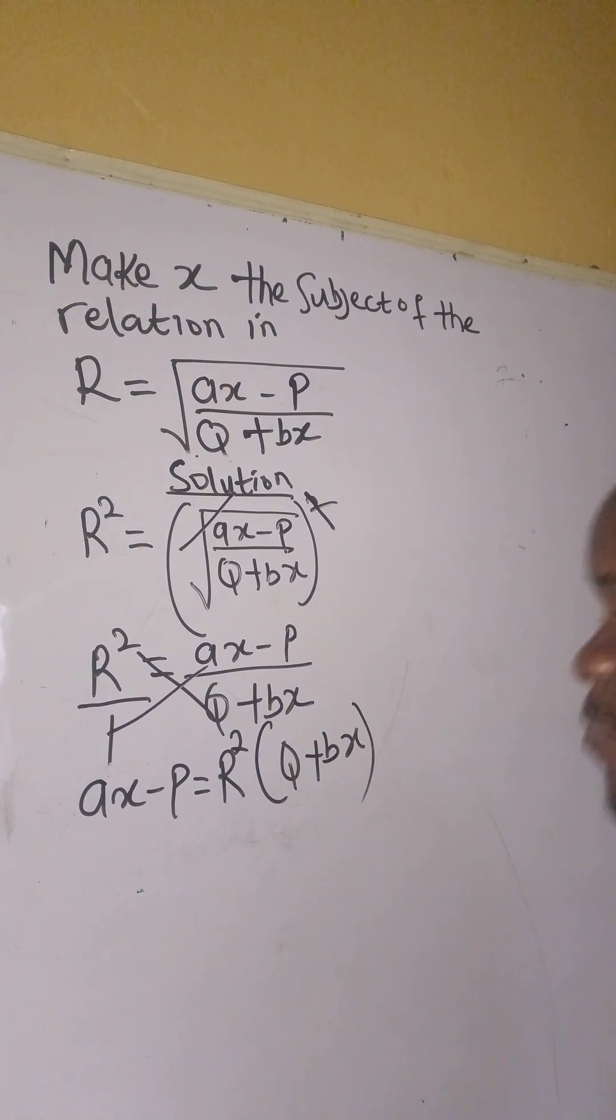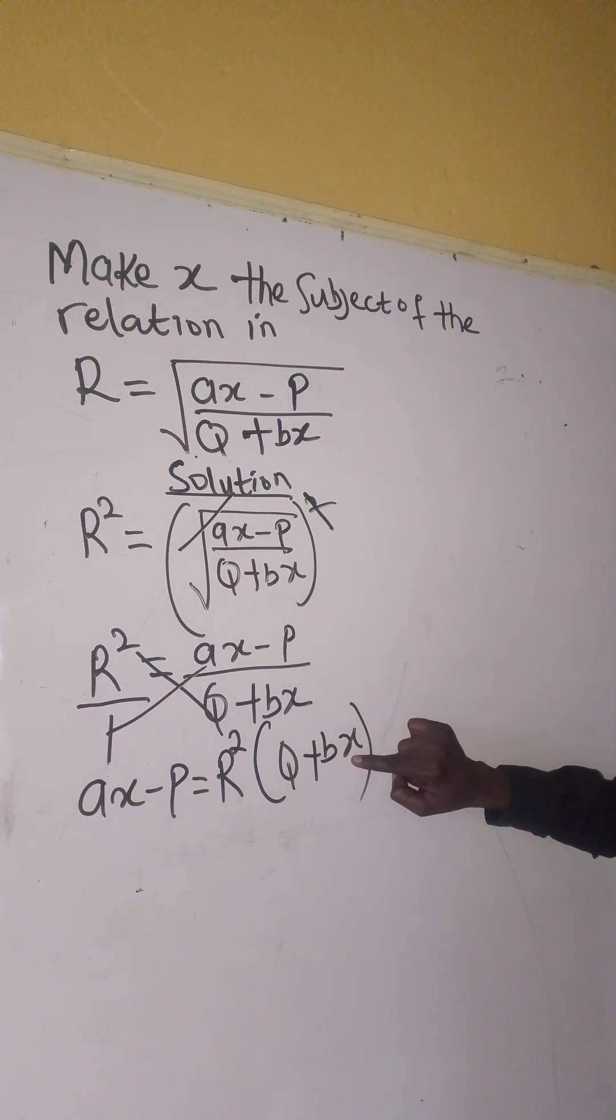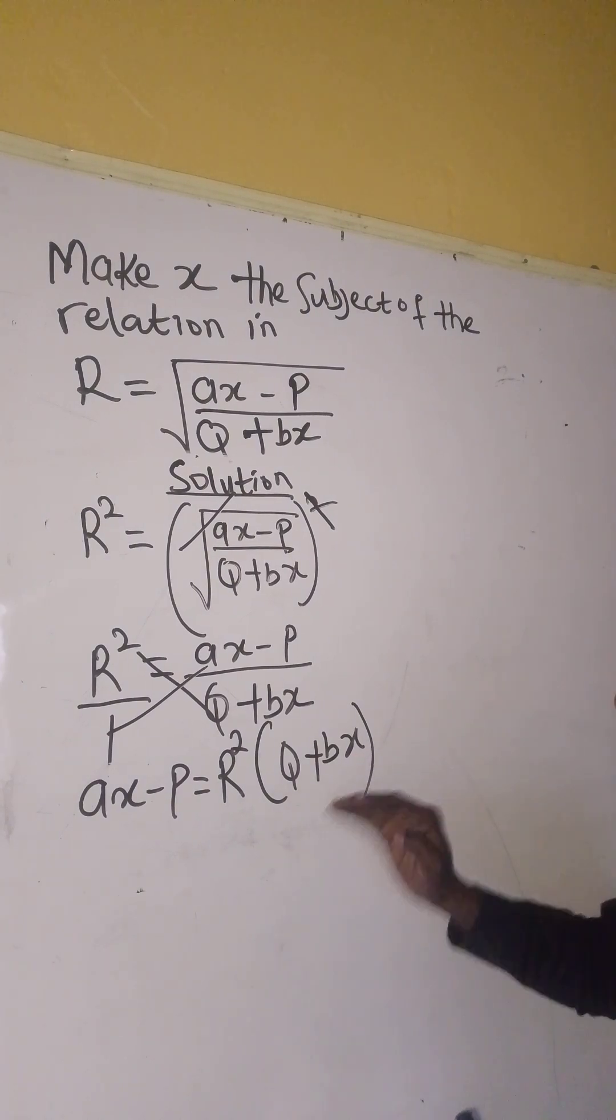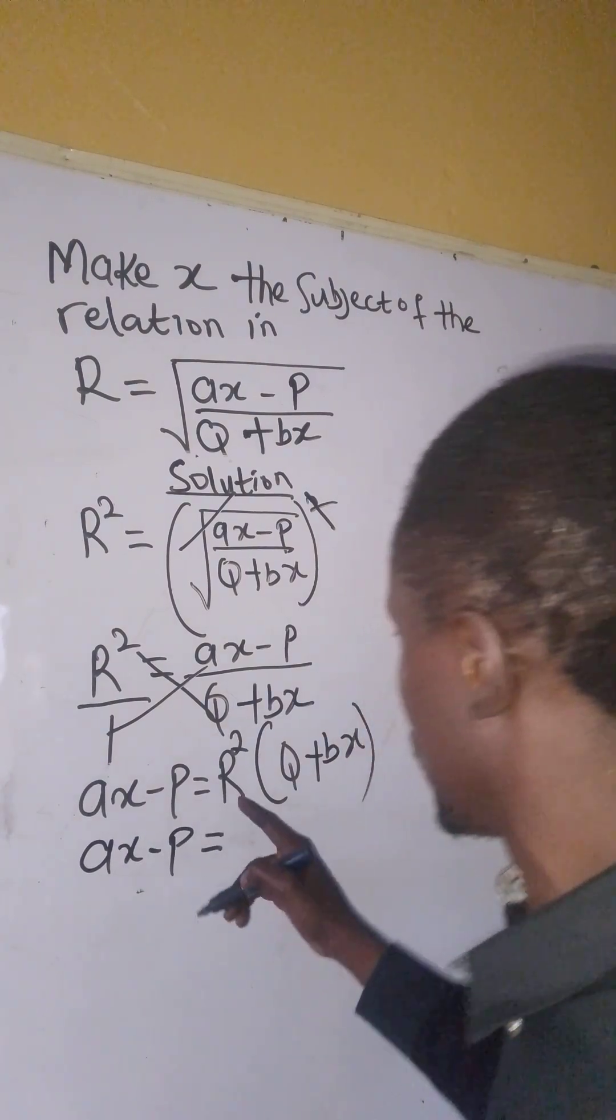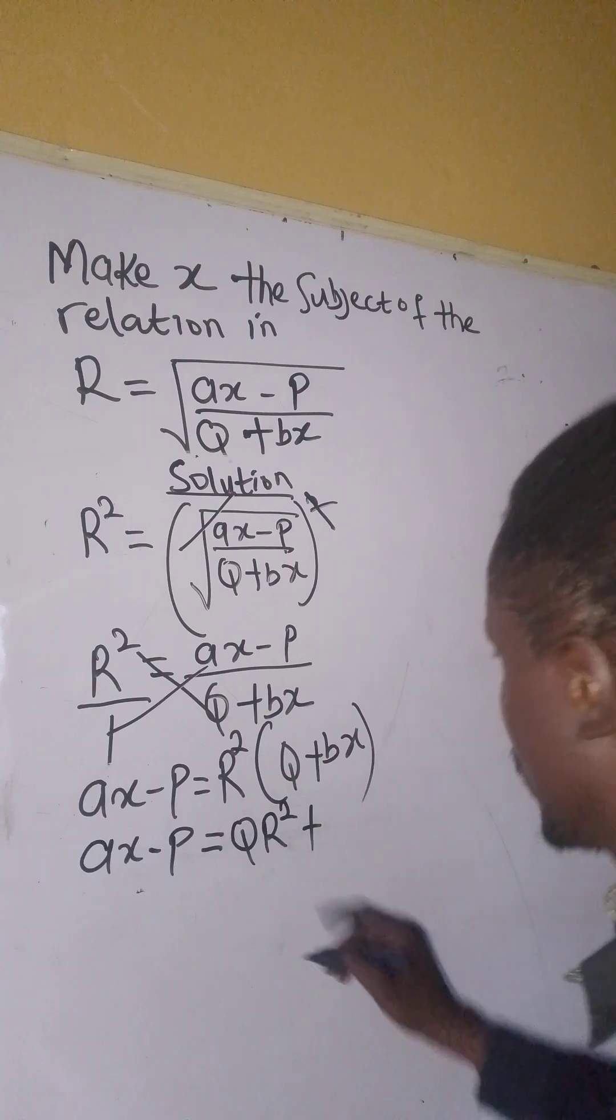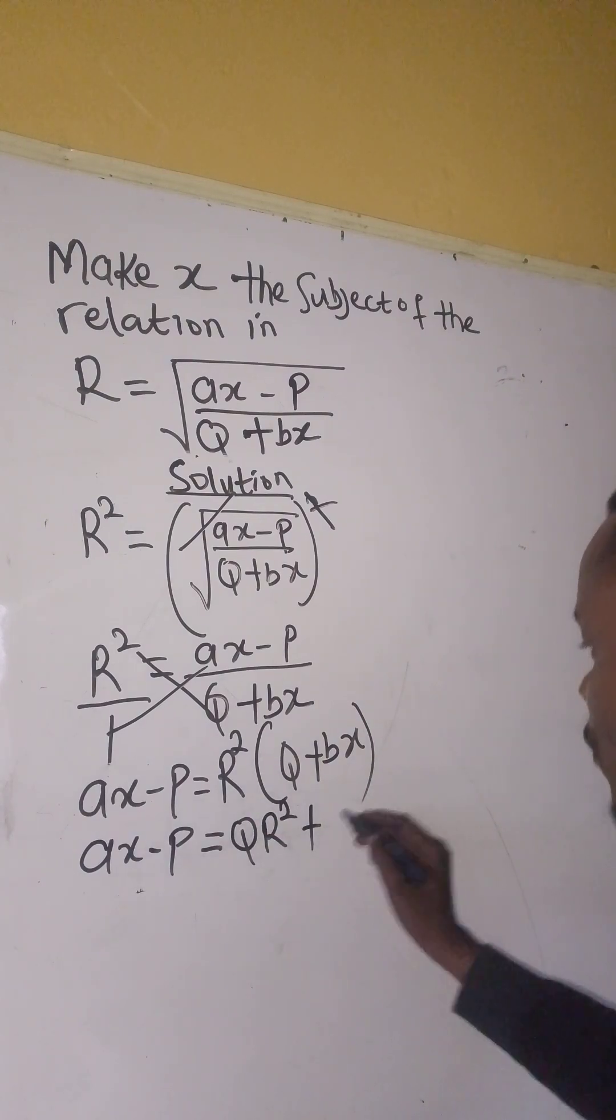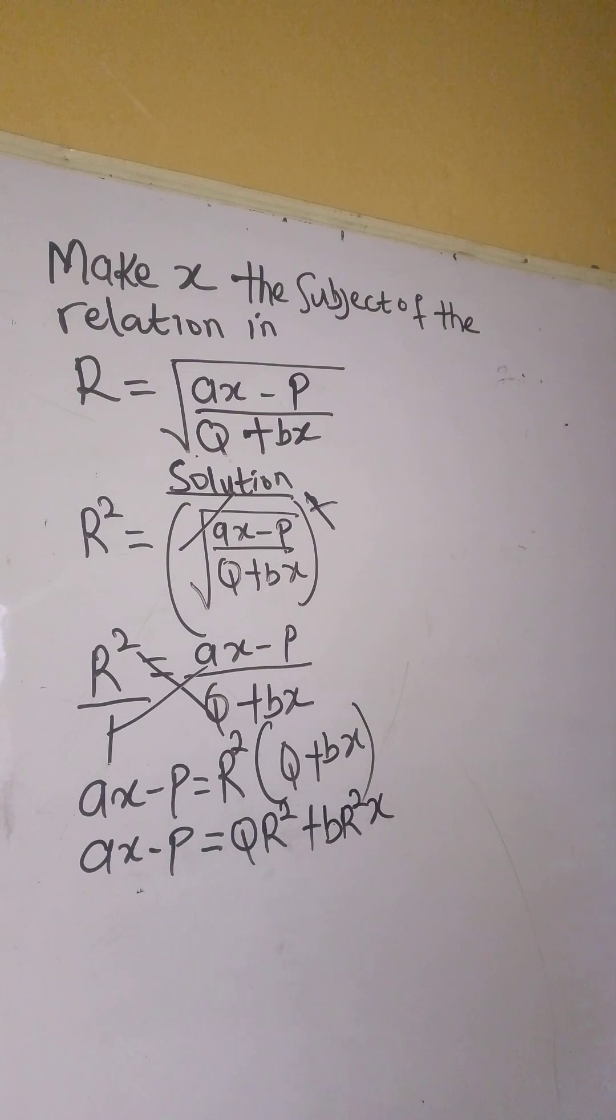So what can we do? Remember, x is what we need, and now we have x in bondage - another mountain. We have to remove this bondage by opening the bracket. So we have ax - b equals r² times q, which gives us qr², plus r² times b, which gives us br²x.